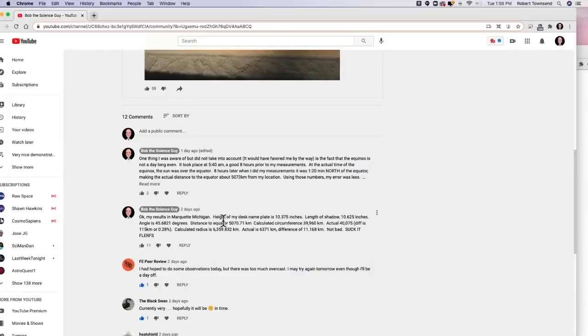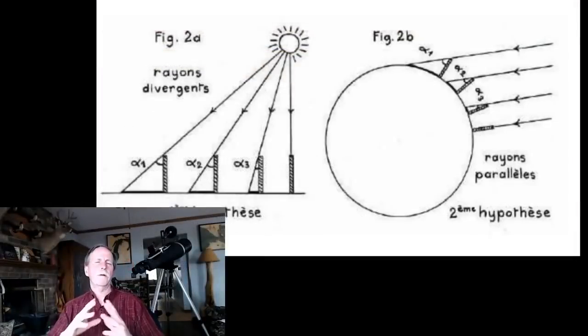Now I actually do the math on my community page on my YouTube channel. And as you can see, here are my results. And I've got the numbers in it, 45.6821 degrees. The distance to the equator is 5070.71 kilometers. And my calculated circumference is 39,960 kilometers. The actual accepted circumference of the earth is 40,075 kilometers. And I was 115 kilometers off. I calculated the radius at 6359. And it's actually 6371. With a difference of about 12 kilometers.